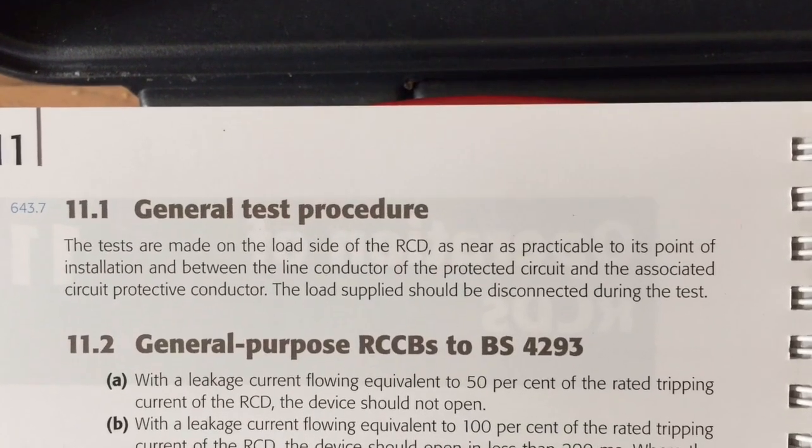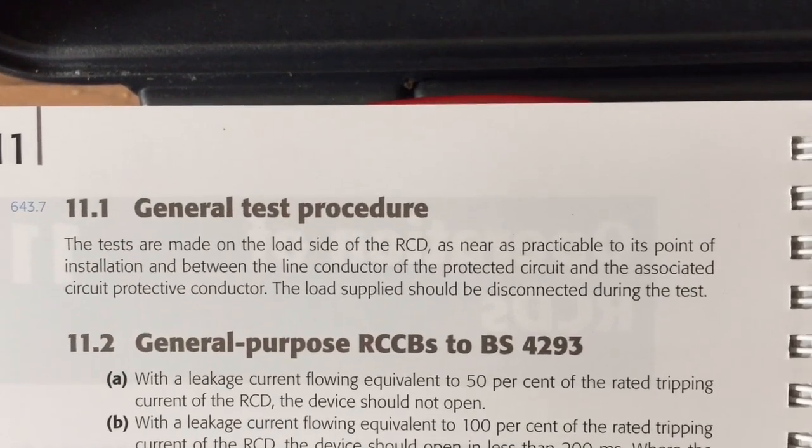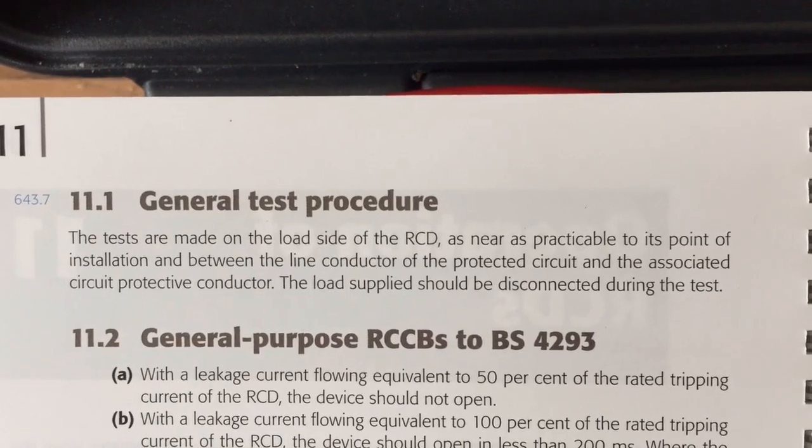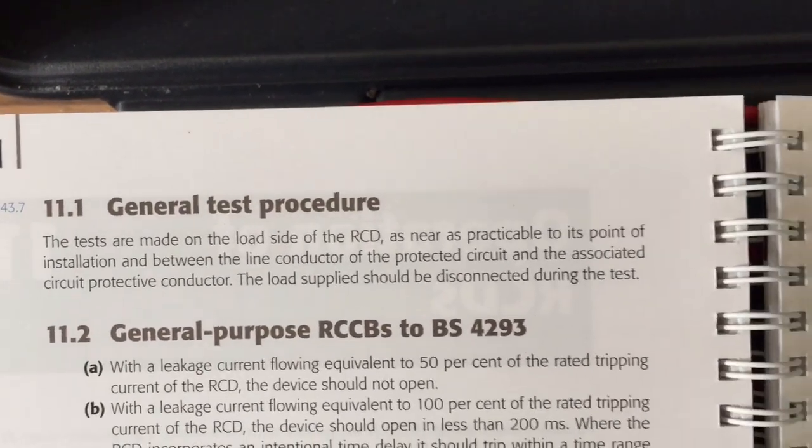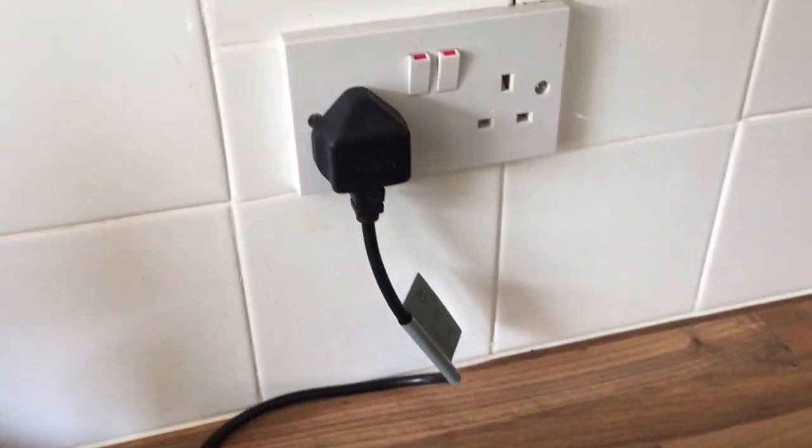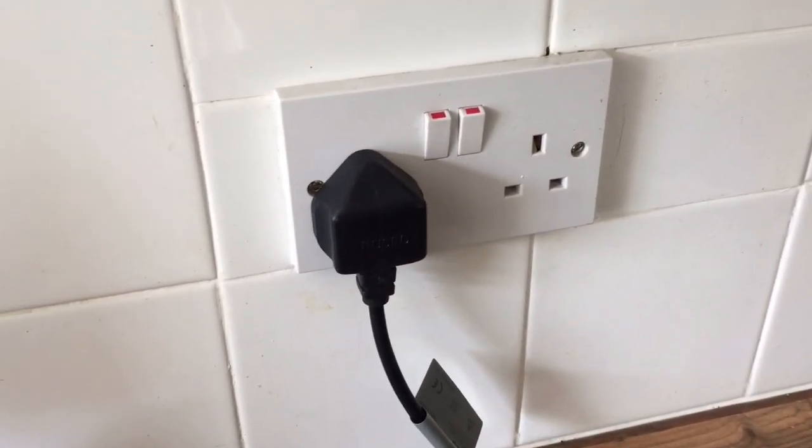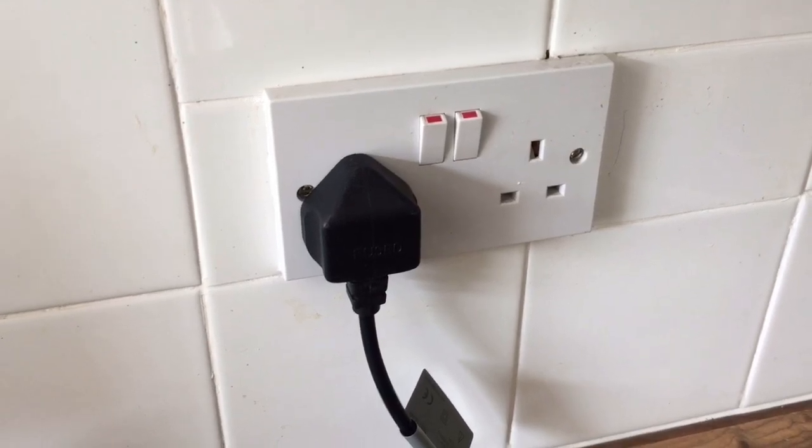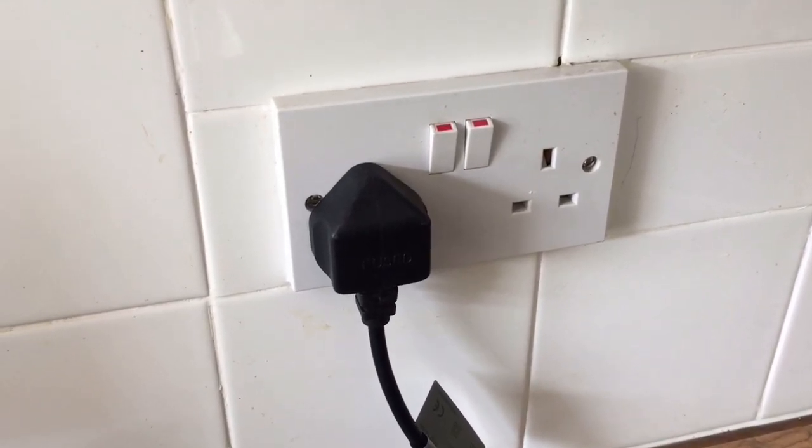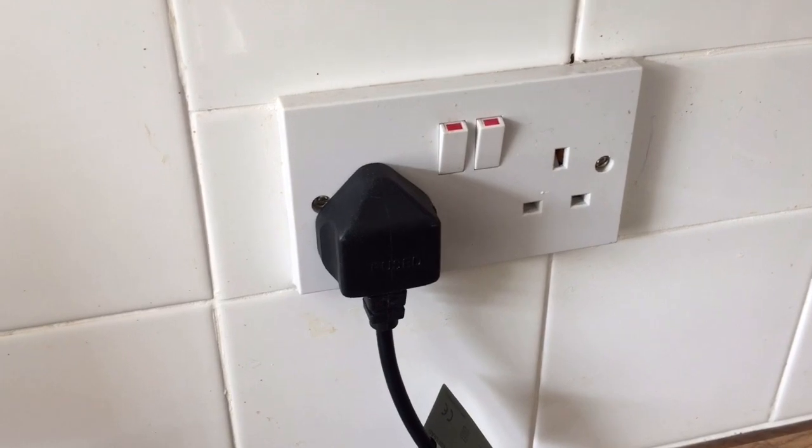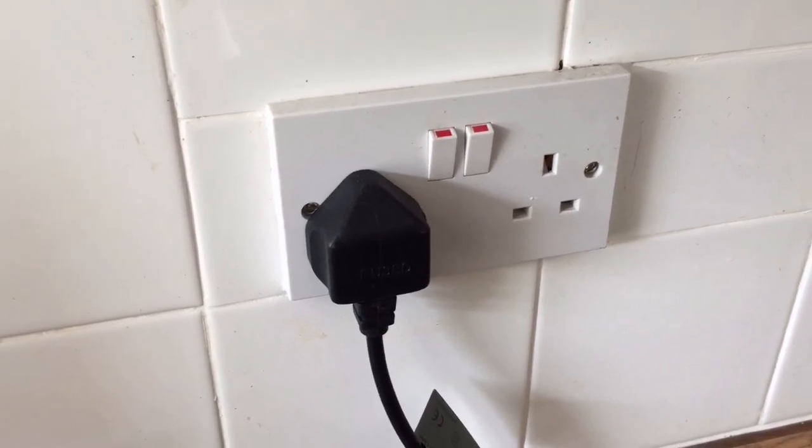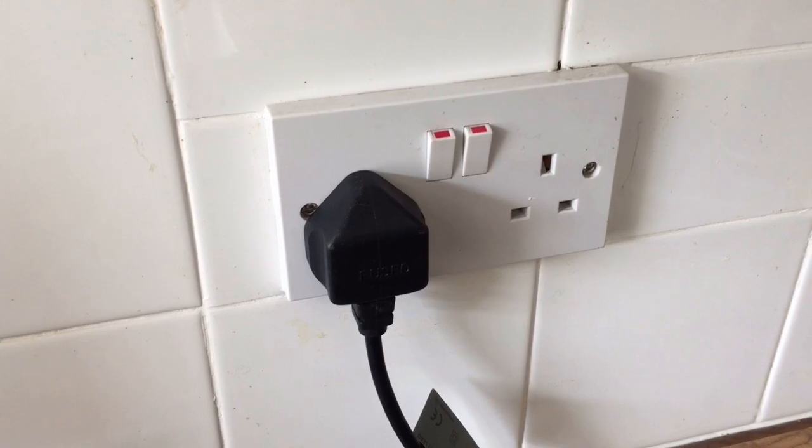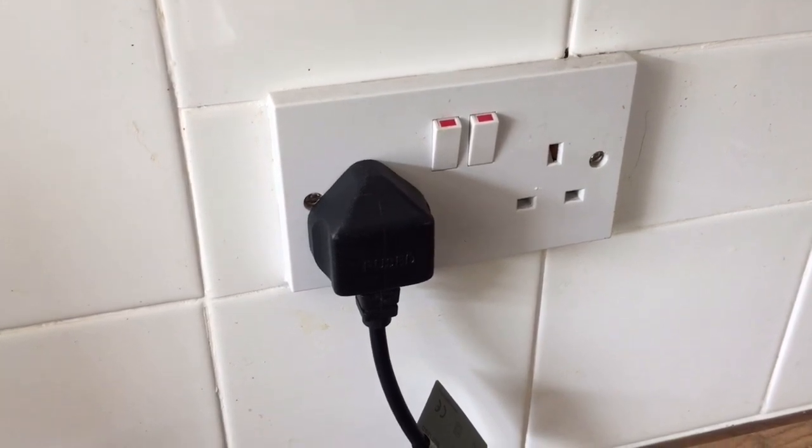To make the test on the RCD, if we look at the on-site guide, it says as near as practicable to its point of installation, but I remember reading an article in Professional Electrician a couple of years back and it said there's no real advantage in trying to do it at the nearest socket to the point of installation, and that we can just take it wherever is convenient. I mean here I'm actually in the kitchen. So as I said with inspection and testing, we get conflicting advice from reputable sources.